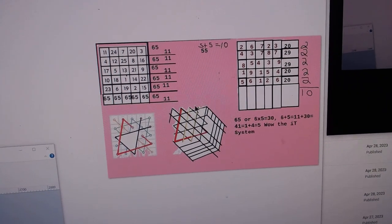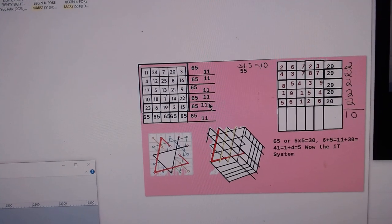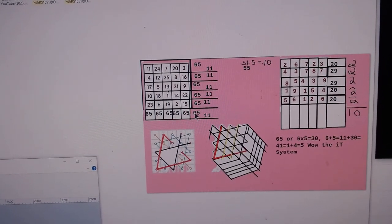How is everybody? First piece in this video, this is what they call Mars square. These are the numbers. When you add them up, they all equal to 65.